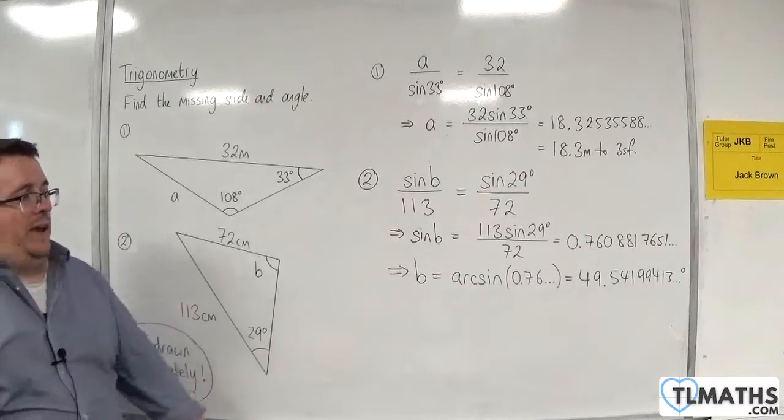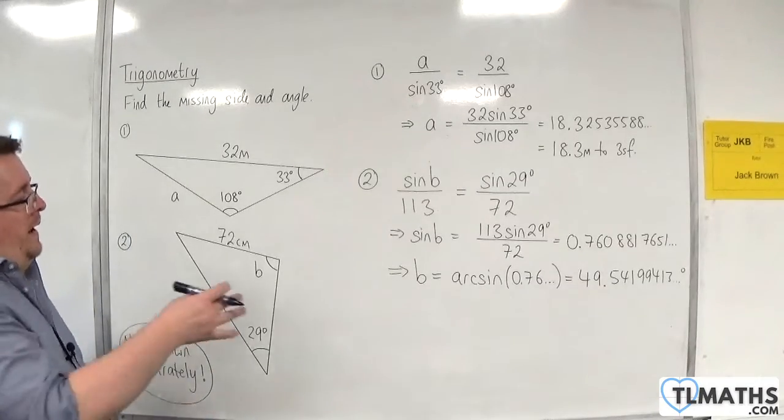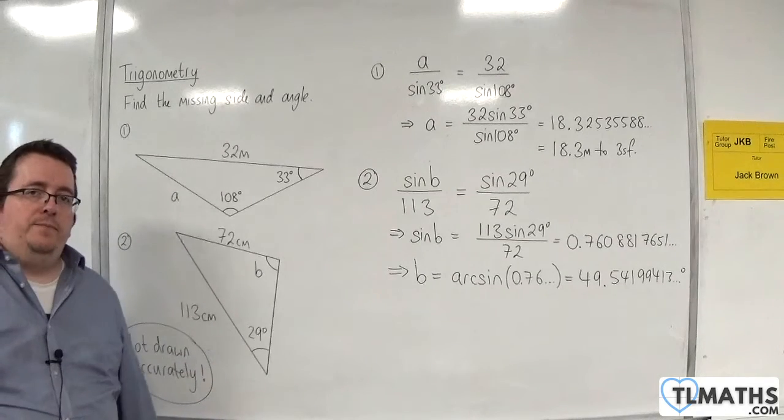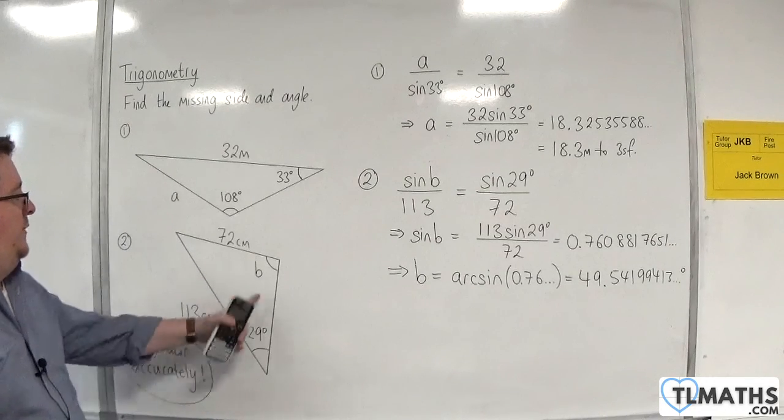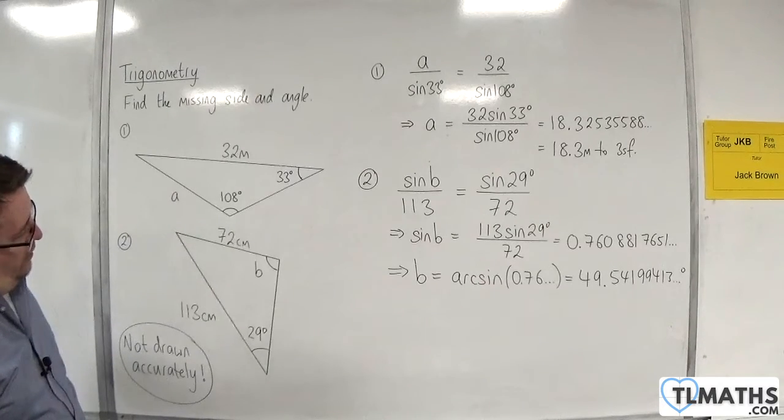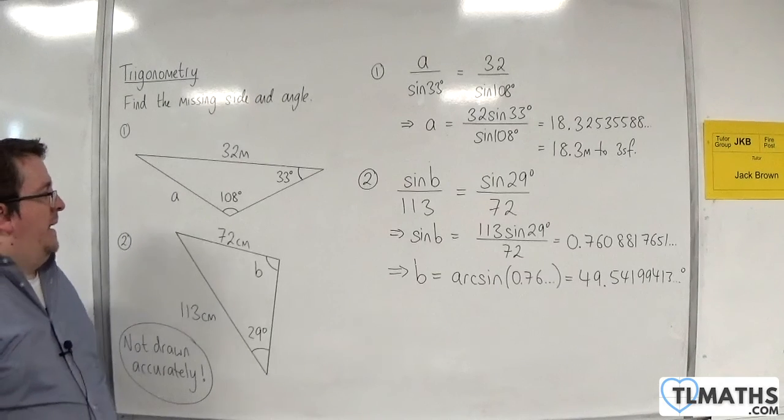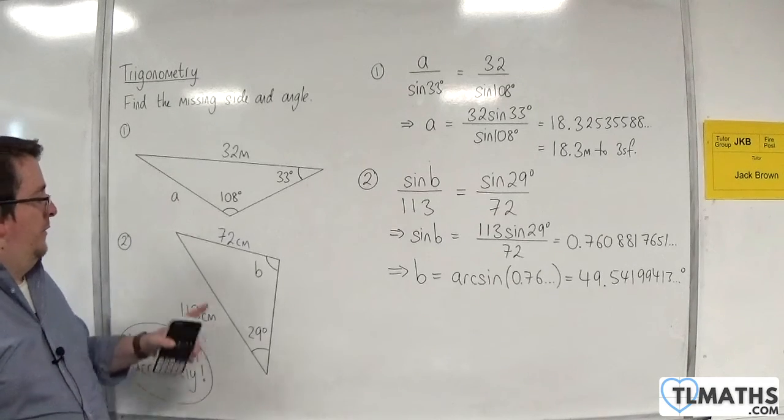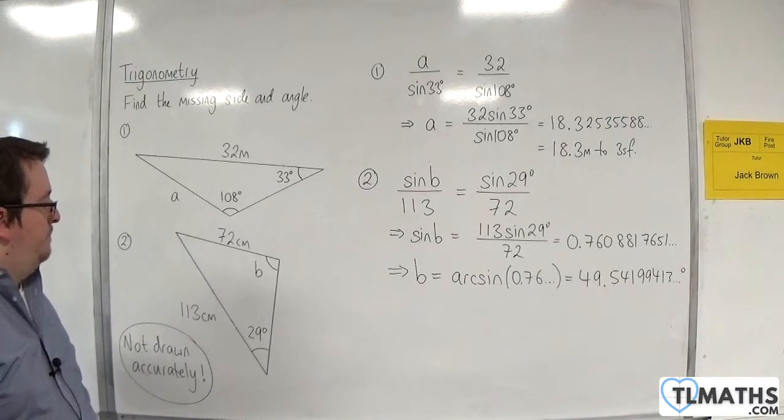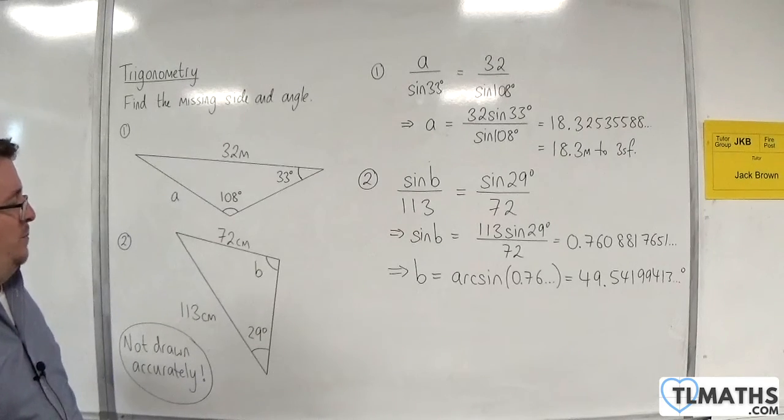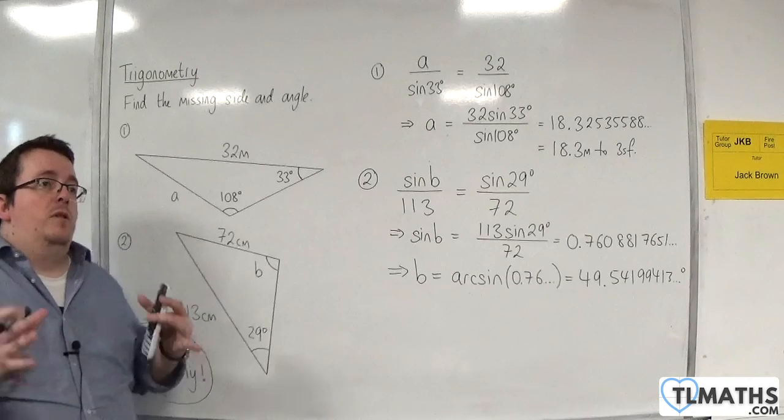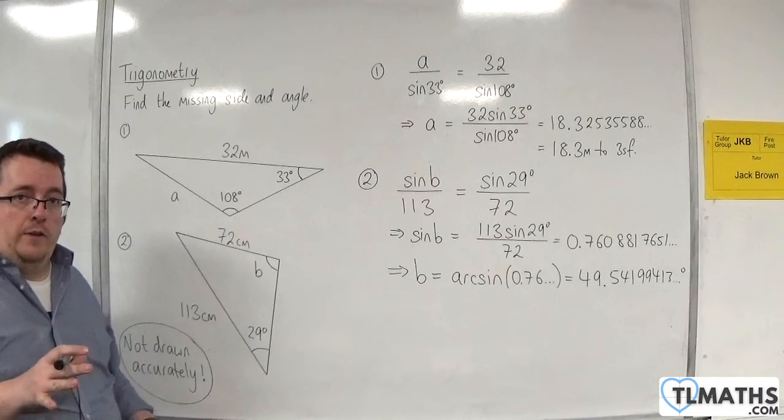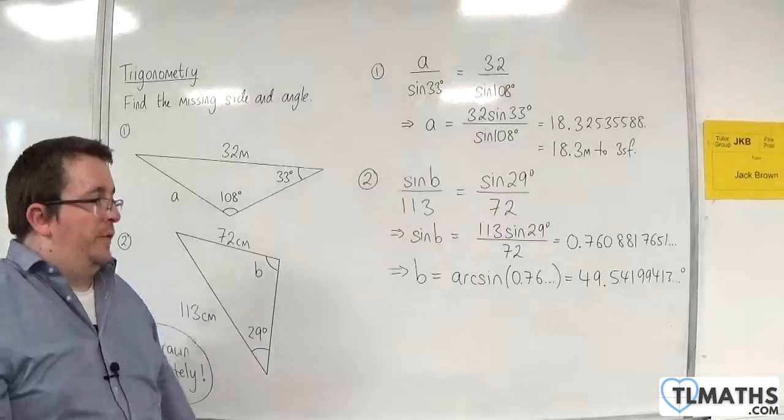Now let's take a look at the diagram. Is b an acute angle? Well, the way it's been drawn here, clearly it's not. Clearly b is an obtuse angle. There's nothing wrong with how this has been drawn. It's just that there are two ways you can draw this same shape with a different angle b.